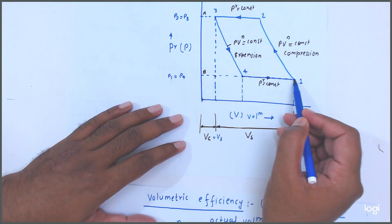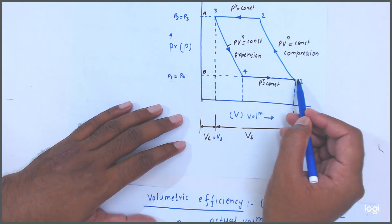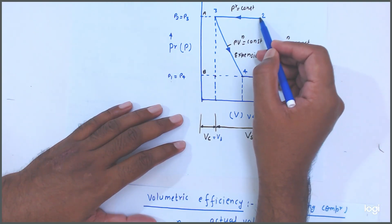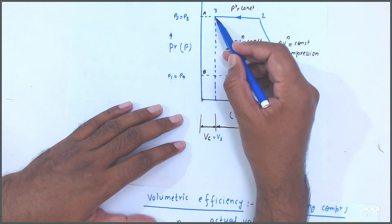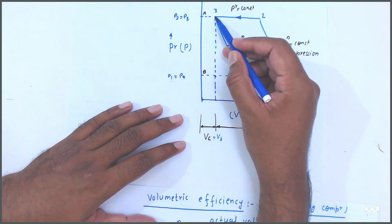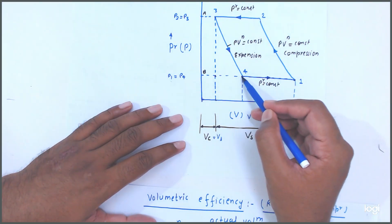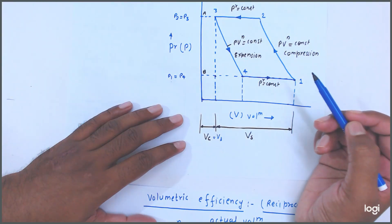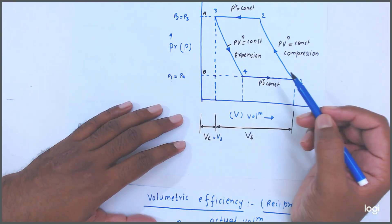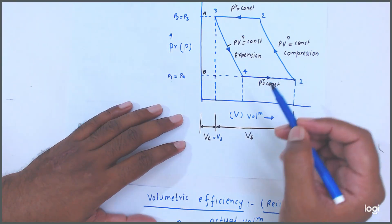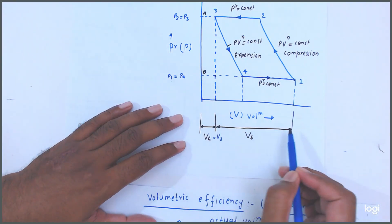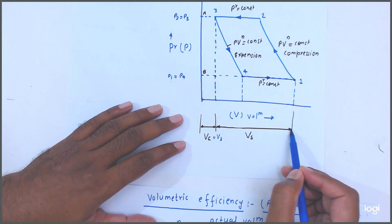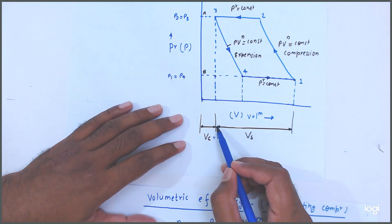Suction is at constant pressure, 1 to 2 is compression, 2 to 3 is discharge, and again 3 to 4 is expansion. Now friends, here you see — this is the stroke volume or we can say swept volume.